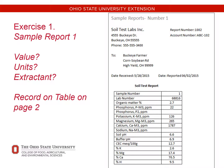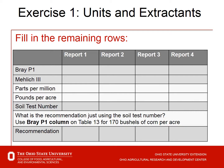Here is sample report number 1, the upper left-hand corner of page 2. We want to look for the value, the units, and the extractant. Looking at the report, we find the line for phosphorus — the number reported is 22. The units are parts per million. The extractant is M3, or Mehlich 3. So we have a 22 parts per million Mehlich 3 soil test. Going back to the table on the top of page 3, we fill in: Mehlich 3, parts per million, 22.